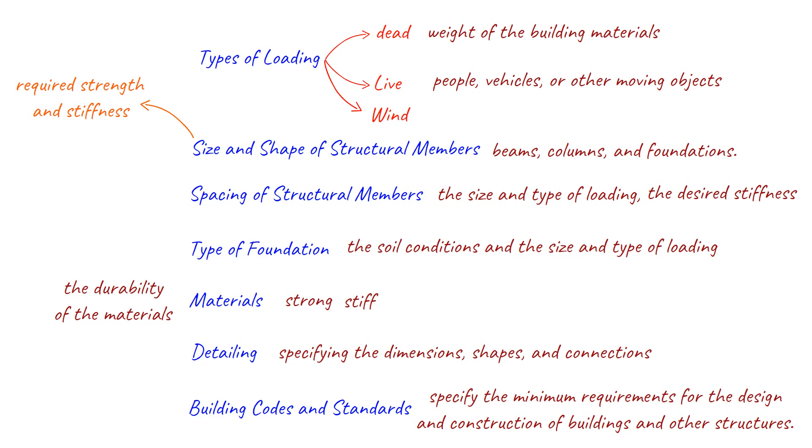In summary, these are some of the key rule of thumb guidelines for structural engineering. Proper consideration of the types of loading, size and shape of structural members, spacing of structural members, type of foundation, materials, detailing and building codes and standards is essential for the proper performance of a structure.